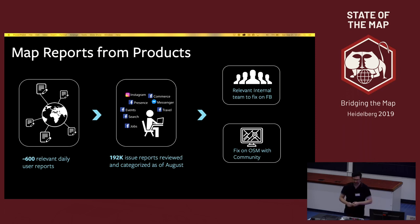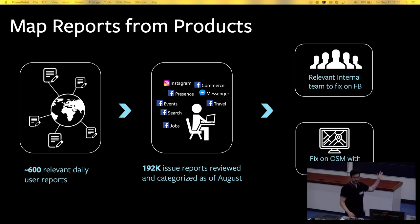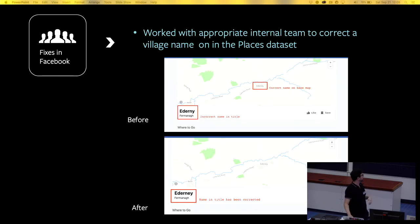Reactively, one of the ways we do this is through map reports on our product. On any map surface on Facebook, you'll have the ability to report a maps issue. A user can bring that to our attention — like a town name being wrong, a road looking incorrect, a business not located in the right place. We get about 600 of these reports each day, and we have a team that reviews each and every one. Since we started using OpenStreetMap, there have been over 192,000 user reports reviewed. Generally, reports fall into two buckets: ones relevant to Facebook data, and ones fixed in the OSM community.